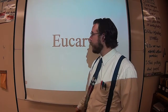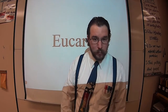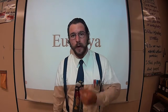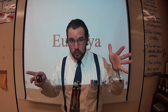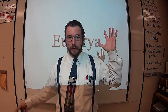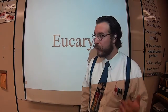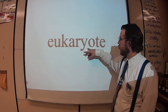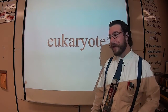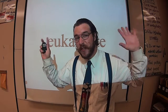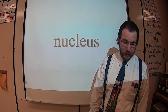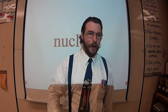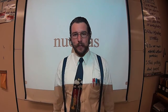Everything in domain Eukarya is a eukaryote — it has a true nucleus. 'Eu' means true and 'karyo' means nucleus, so eukaryote means it has an actual true nucleus. Thanks for watching everyone — hopefully all that makes sense. You've got questions, that guy's got answers.